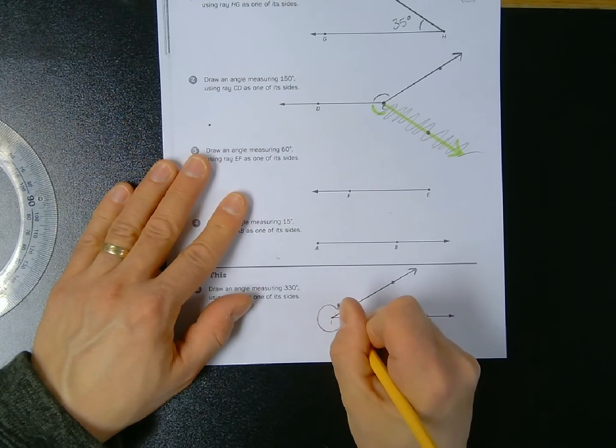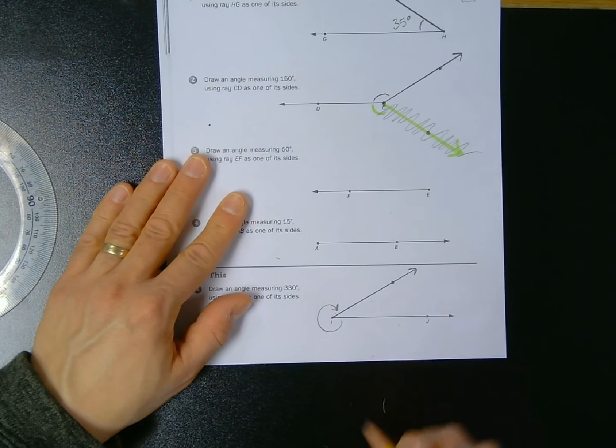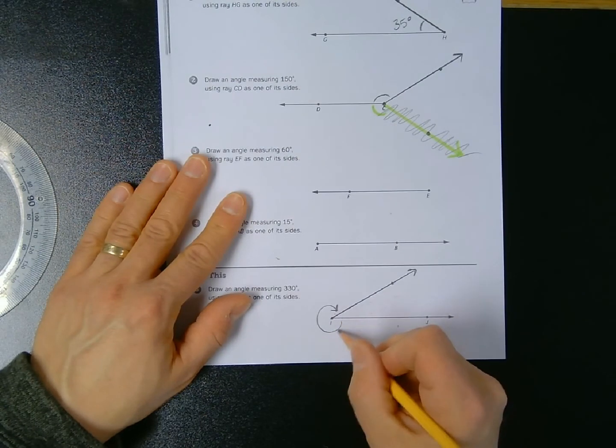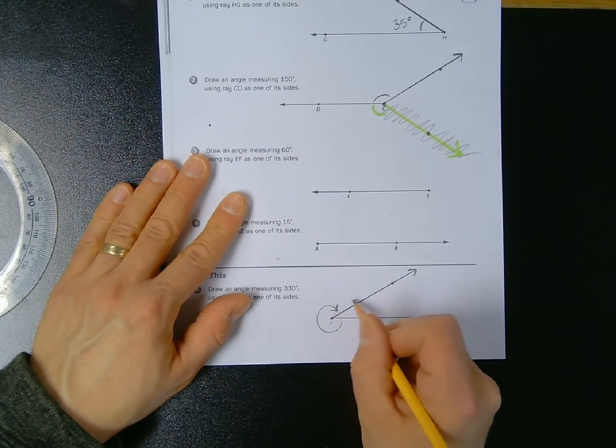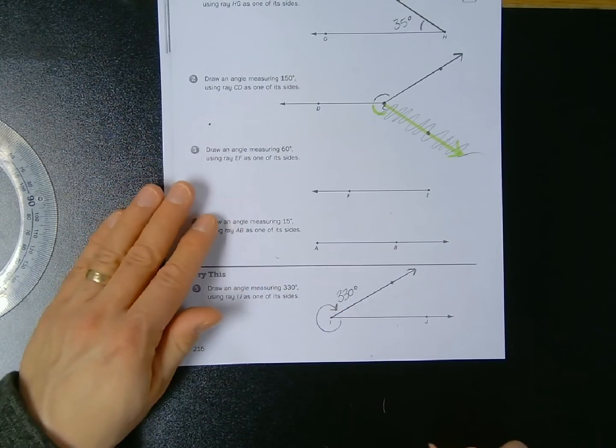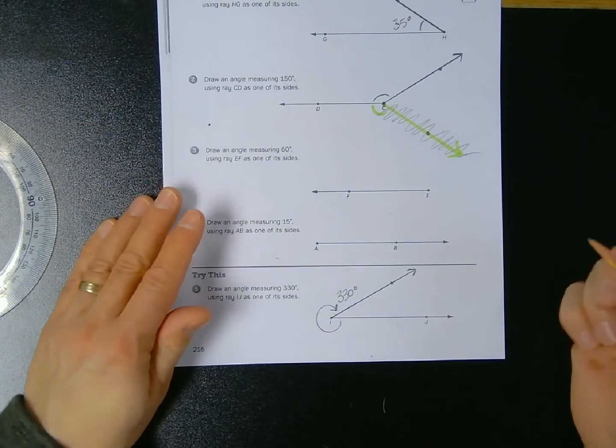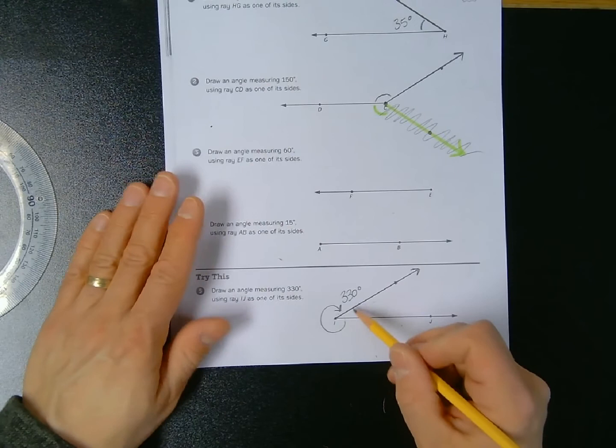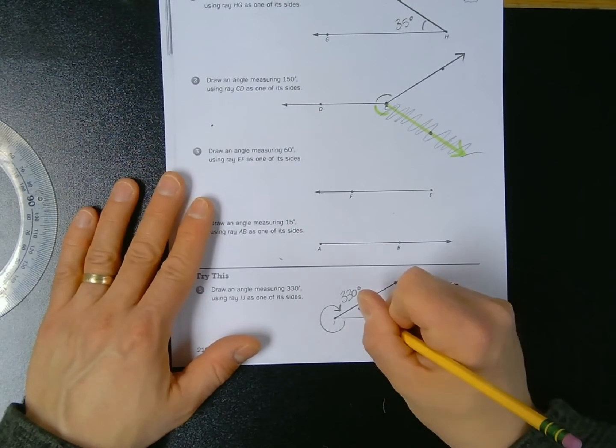The measure of the angle on the outside of this vertex is 330 degrees. And since a circle is 360 degrees total, the measure of this angle on the inside would be just 30 because 330 plus 30 gives me 360.